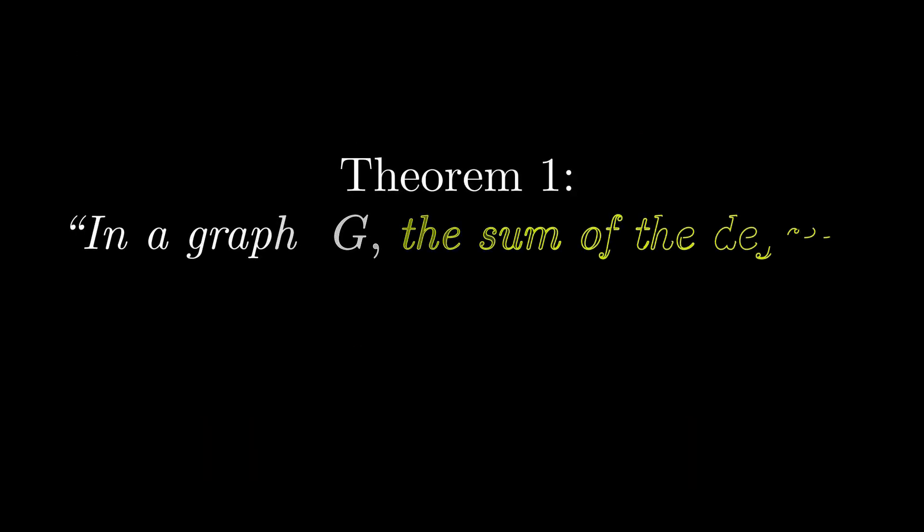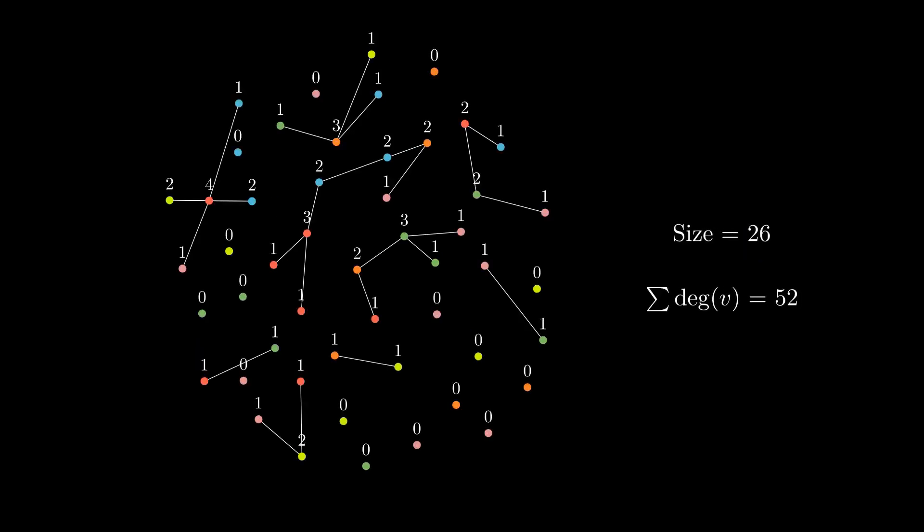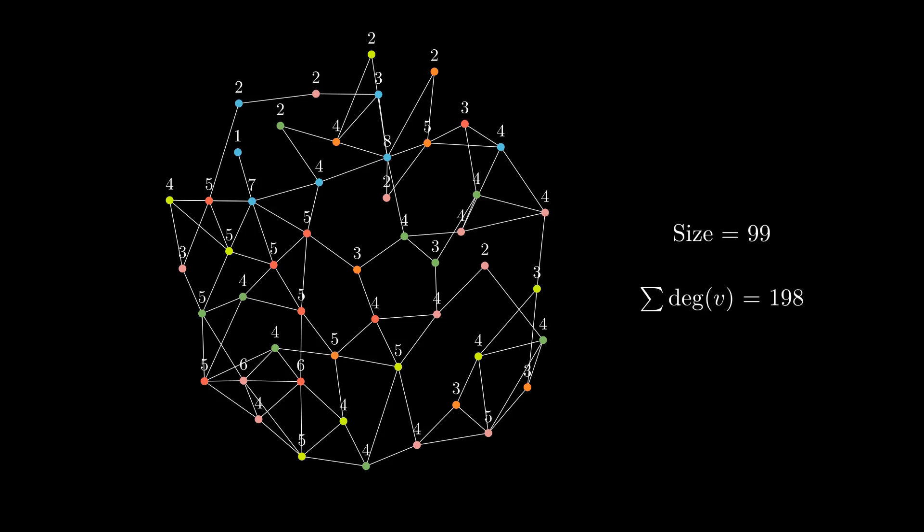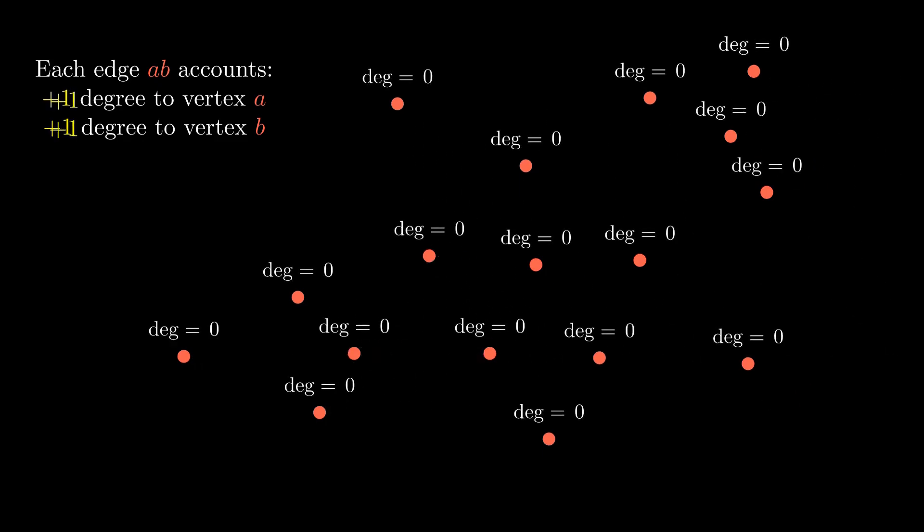Now, after learning some definitions, let us turn to the so-called first theorem of graph theory. In graph G, the sum of all of the degrees of the vertices is equal to twice the number of edges. Here is the proof: that is simply because each edge contributes to exactly two vertices, meaning that it adds degree plus 1 to a vertex, and adds degree plus 1 to the other vertex. So, obviously the total degrees of a graph G must be 2 times the size of G.